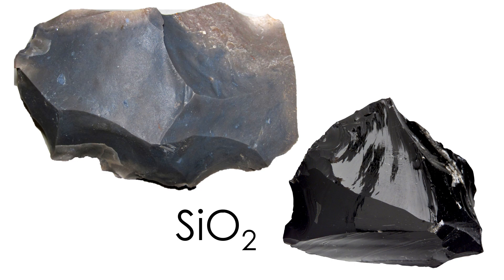A quick look at these rocks and you can tell right away why they were the go-to choices for arrow makers of old. Both rocks are very solid and hard, but neither are particularly heavy. They both almost entirely consist of silicon dioxide, or silica, the same material found in the mineral quartz and in glass. However, silica, unlike pure quartz, is amorphous. It's also very, very brittle. So when chert and obsidian break, they break like glass, and you end up with conchoidally fractured surfaces with very sharp edges, perfect for arrowheads.